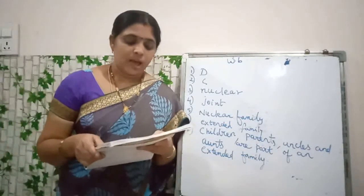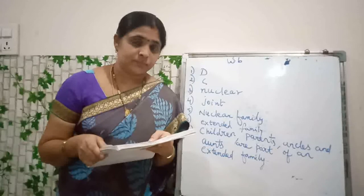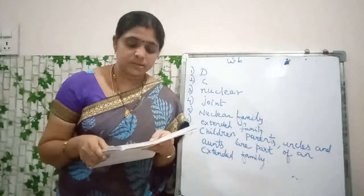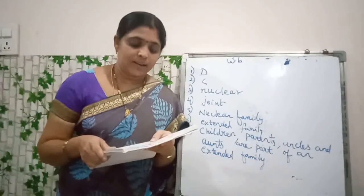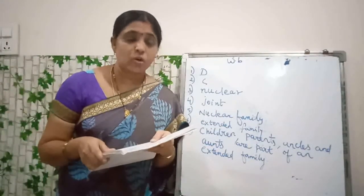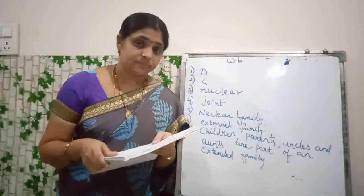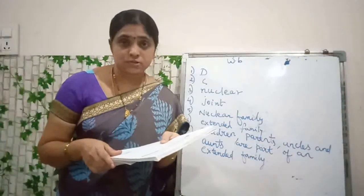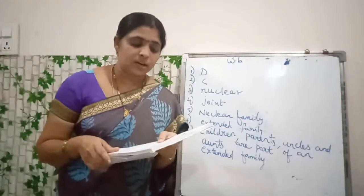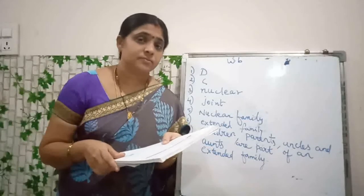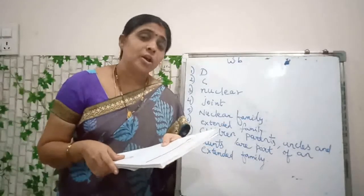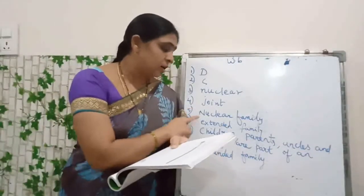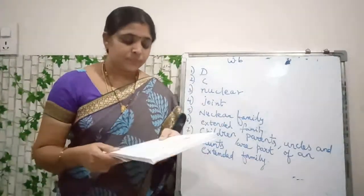Next, fill in the blanks. A small family that consists of the mother, the father and their child or children is called a nuclear family. What is the answer? Nuclear family.